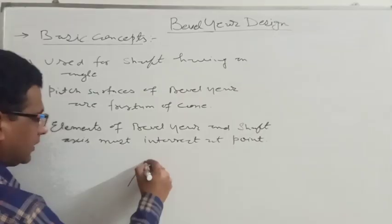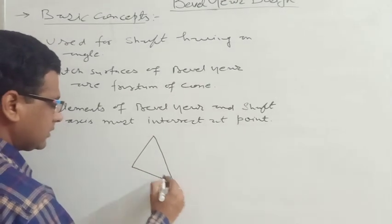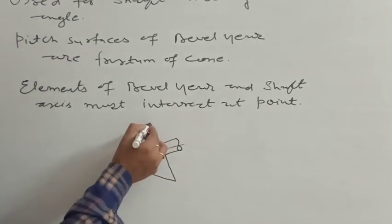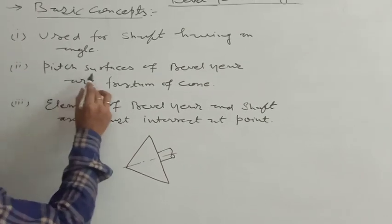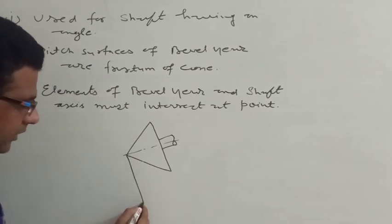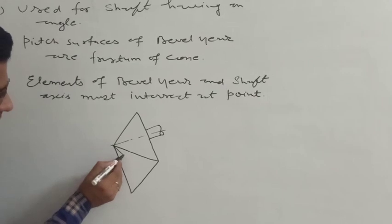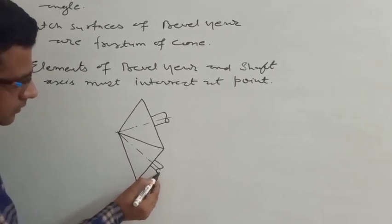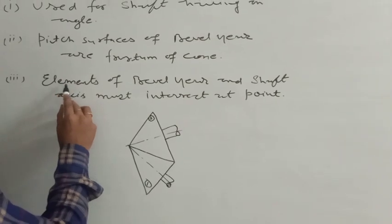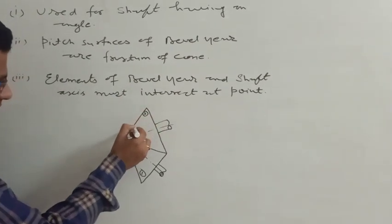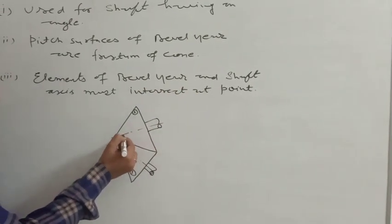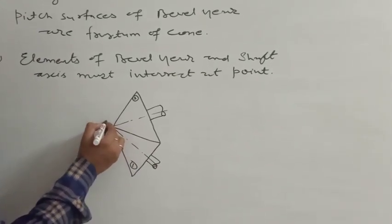Consider this is a first bevel gear. The teeth are cut on these conical surfaces, which is why the pitch surfaces of bevel gears are the frustum of a cone. For the second bevel gear, the element — that is, the slant surface — and the axis of each shaft must all intersect at this point O.